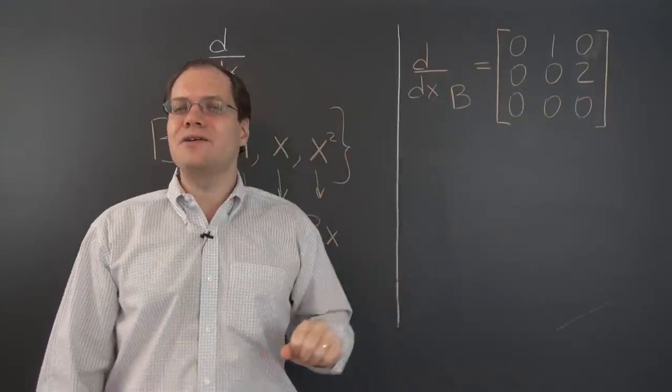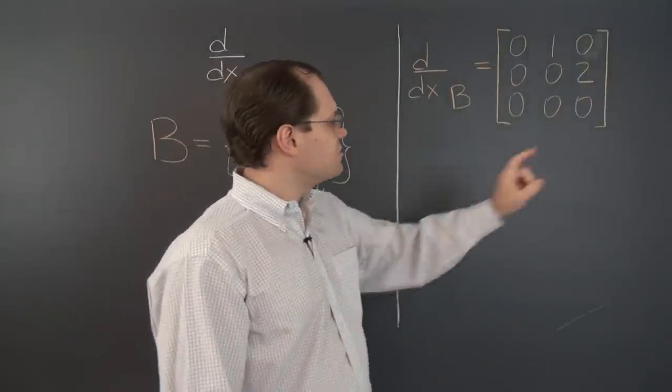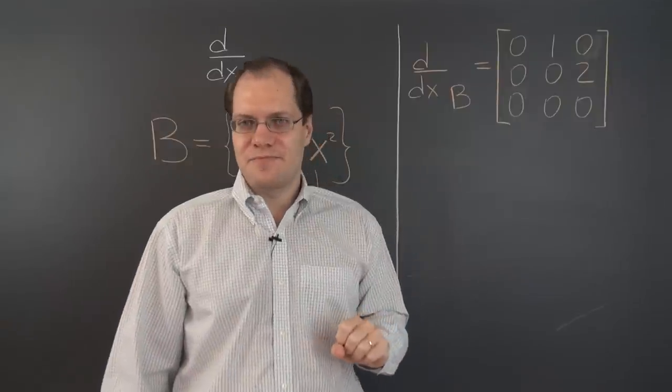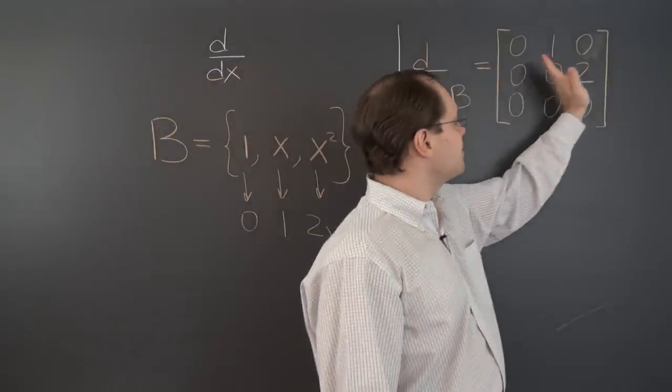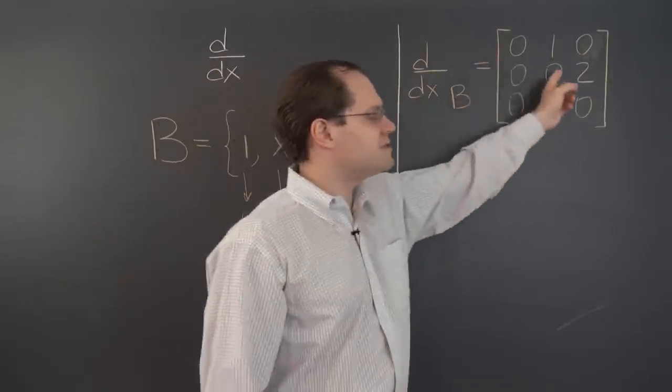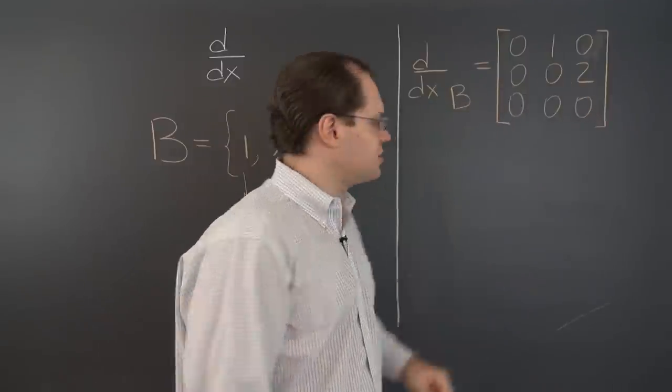All right, now what are the eigenvalues and eigenvectors of this matrix? Well, this matrix can be considered as an upper triangular matrix. So all of its eigenvalues are on the diagonal. So of course they're all zero.